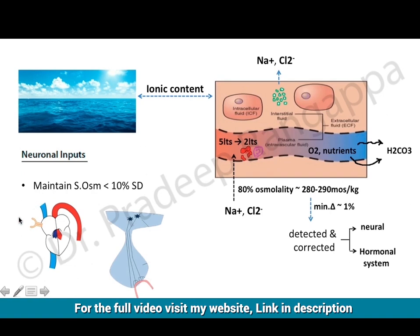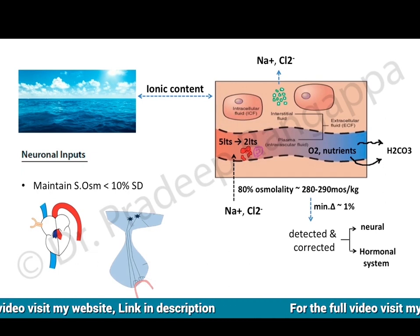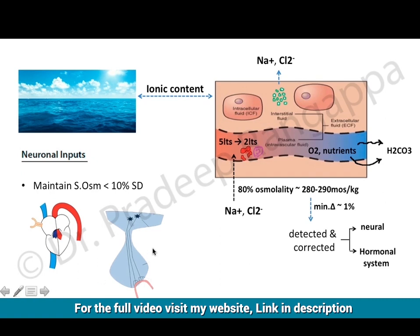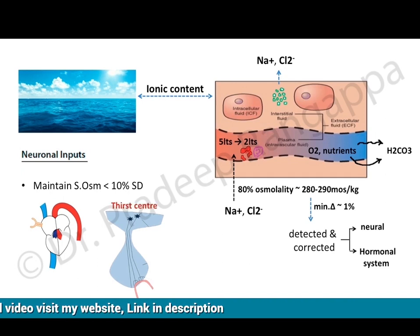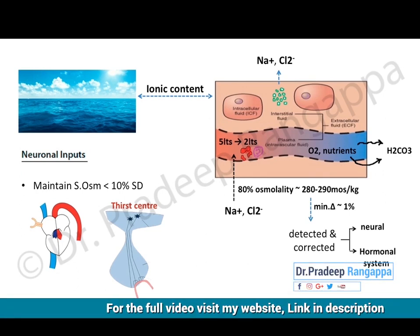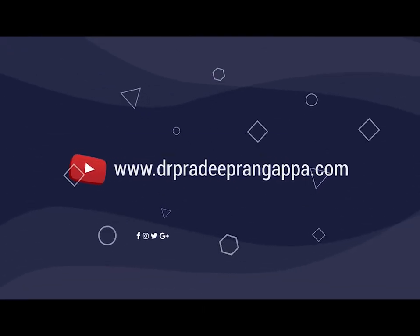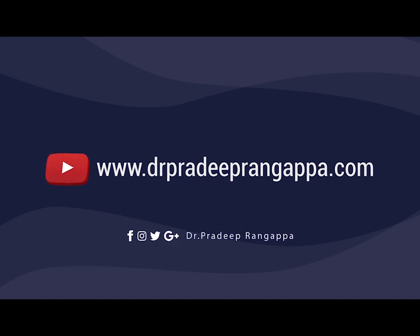The corrective mechanisms are mediated mainly by osmoreceptors and baroreceptors. Baroreceptors are present on the atrium and get activated in the setting of any disturbance in osmolality. Osmoreceptors are present in the brain in the hypothalamic and pituitary region, which get activated in the setting of disturbance in sodium and osmolality. When there is a gross disparity in osmolality, the thirst center gets activated and concomitantly these osmoreceptors also get involved.